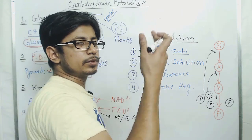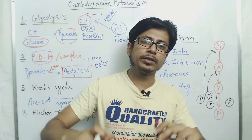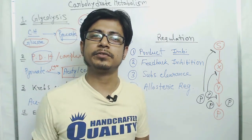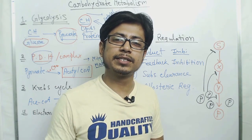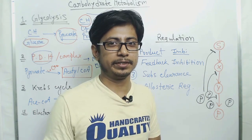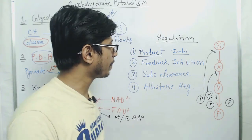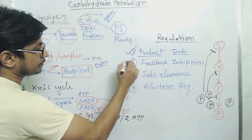In the case of glycolysis, for example, we are going from glucose to pyruvate. So if pyruvate is already present in higher concentration, then glycolysis will be inhibited. This is one example of product inhibition.